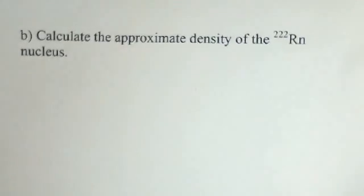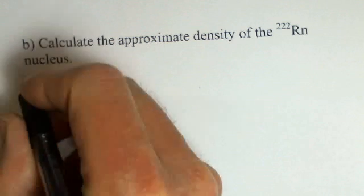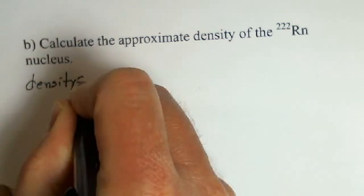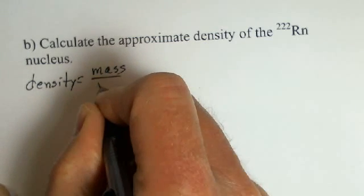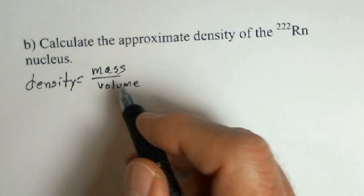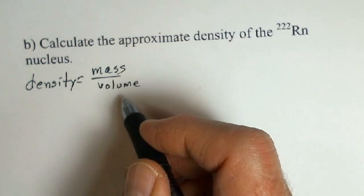Now, we'd like to calculate the density of this nucleus. So there are several steps involved here. Going back to our definition of density, density is mass divided by volume. So we need the mass of one nucleus and the volume of one nucleus. So let's work on the mass first.